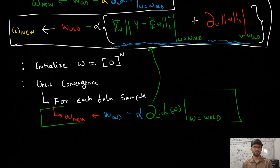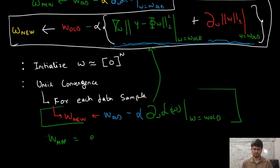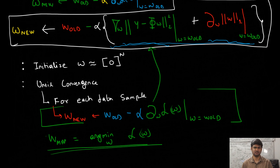This completes our discussion of the subgradient descent algorithm. You can use this simple first-order algorithm to minimize the loss function in the L1 norm regularized least squares and obtain the optimal solution W_MAP. As seen in Bayesian linear regression, the MAP estimate is W_MAP = argmin_W L(W).